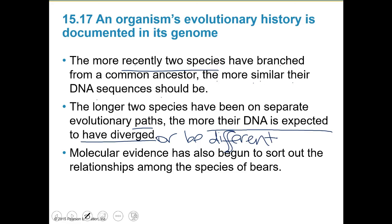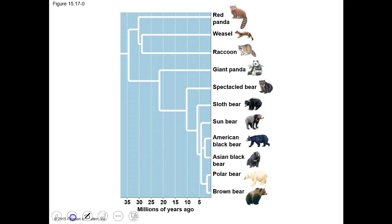Molecular evidence has also begun to sort out relationships among species of bears. The polar bear and the brown bear are probably the closest - we can even get a 'grolar bear' from those two. The American black bear and the Asian black bear are also fairly similar on this evolutionary tree. All of these species came from a common ancestor. The sloth bear and spectacled bear are also placed based on molecular information.